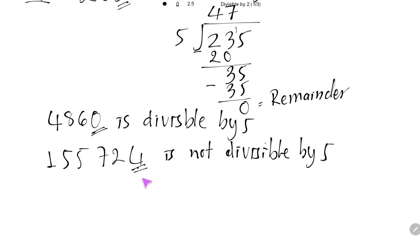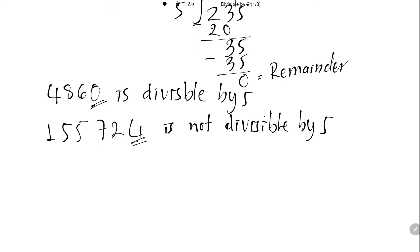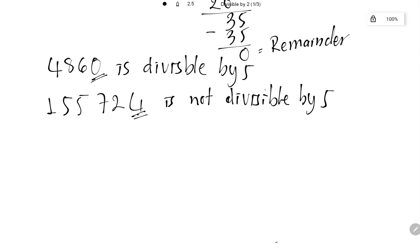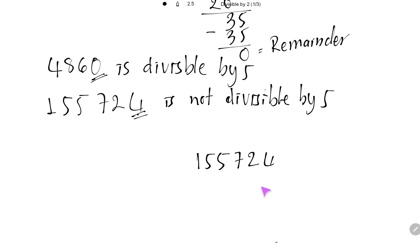This means that the remainder is not 0. Now to check that this number is not divisible by 5, I will divide 155724 by 5. So 1 cannot be divided by 5, then I divide 15 by 5.